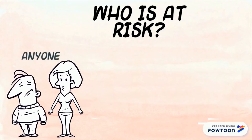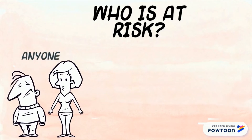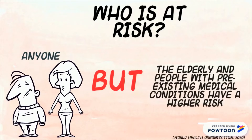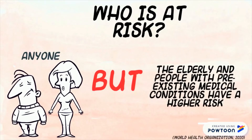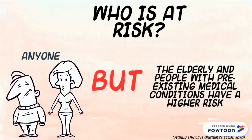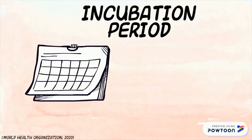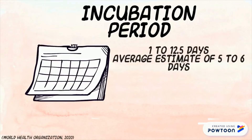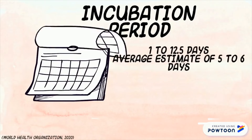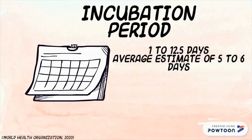Anyone can be susceptible to COVID-19, but the elderly and those with pre-existing medical conditions have a higher risk. The incubation period — the period between exposure to an infection and the appearance of the first symptoms — is around 1 to 12.5 days, with median estimates of 5 to 6 days.